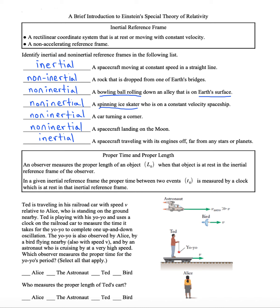Let's just try a simple example here of several objects. There are several objects involved. Ted is traveling in his railroad car at a speed V, relative to Alice, who is standing on the ground nearby. Ted is playing with his yo-yo and uses a clock on the railroad car to measure the time it takes for the yo-yo to complete one up and down oscillation. The yo-yo is also observed by Alice and observed by a bird flying nearby. The bird has the same speed V as Ted. And there's an astronaut cruising at a high speed who also can observe the situation. Which observer can measure the proper time of the yo-yo's period? We want to select all that apply. You can try it and then I'll give my answer.